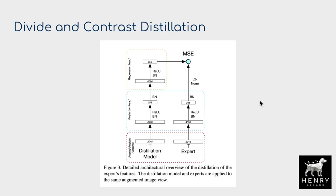Stage three of Divide and Contrast is a knowledge distillation regression loss. Unlike typical distillation frameworks that predict soft-label categorical distributions via cross-entropy, here we use a regression loss to directly predict the representation from one of the expert models. The MLP projection head goes up to 4096 units and then into a 256-dimensional vector. A regression head is appended to the distillation model, using L2-normalized vector representations and mean squared error loss to predict the expert model's output.